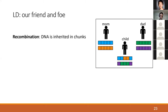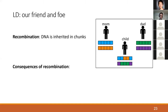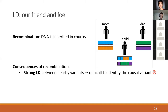LD is our friend and foe. LD exists because of recombination: a child has two chromosomes, one a mosaic from the mom and one from the dad. SNPs that are close by tend to be inherited together from parent to child across many generations, meaning nearby SNPs tend to be correlated. If I have an A at one SNP, I'm probably going to have a T at a nearby SNP.